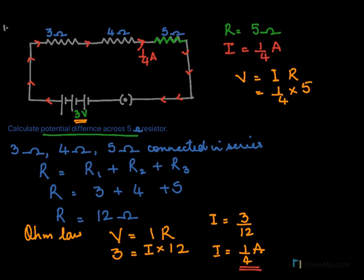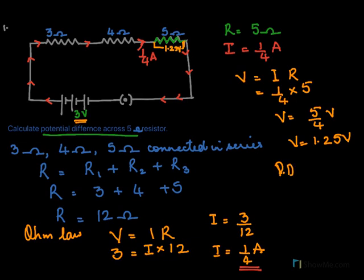V equals I times R, where I is 1/4 and the resistance is 5 ohms, so the voltage is 5/4 volts, which means 1.25 volts. Therefore, the voltage or potential difference across the 5 ohm resistor equals 1.25 volts.